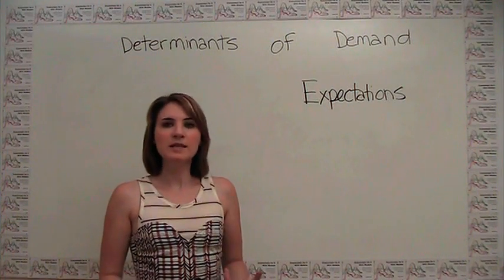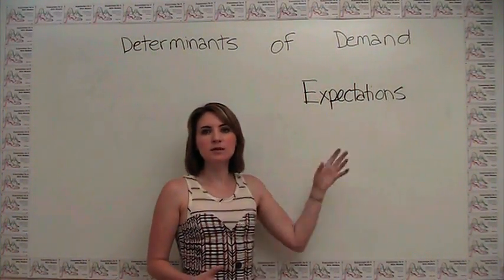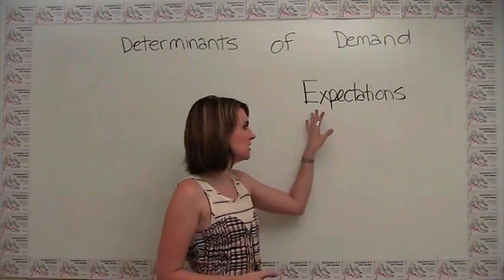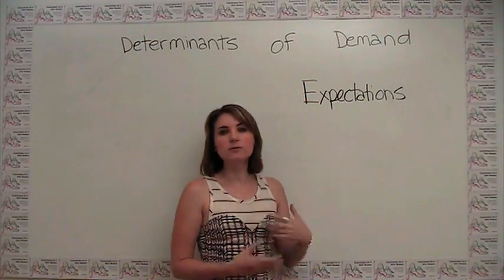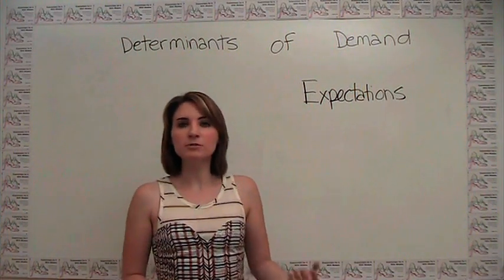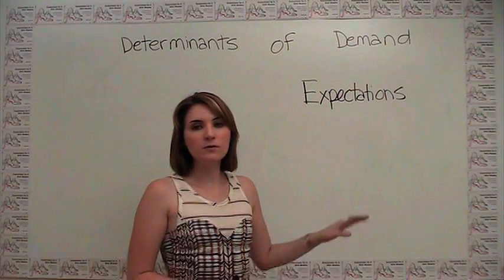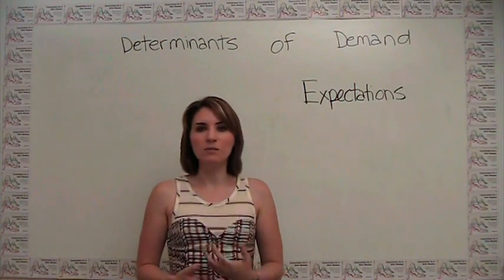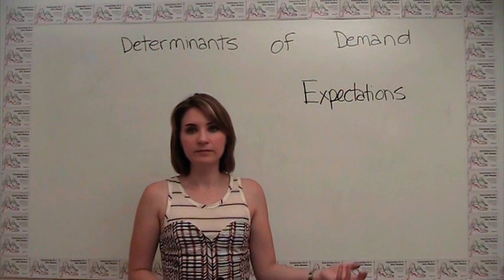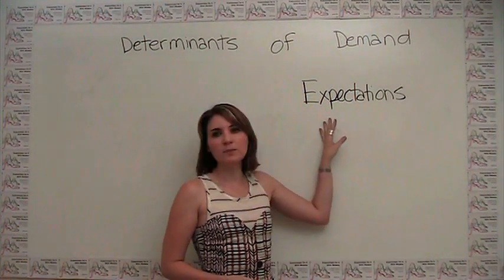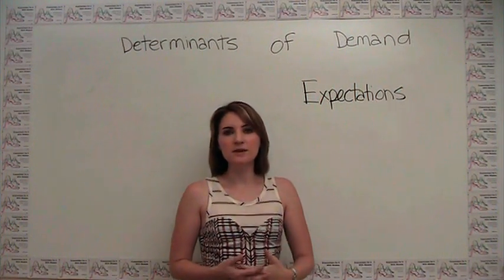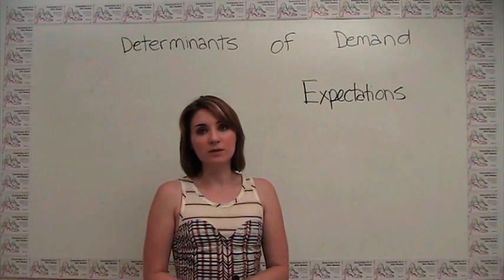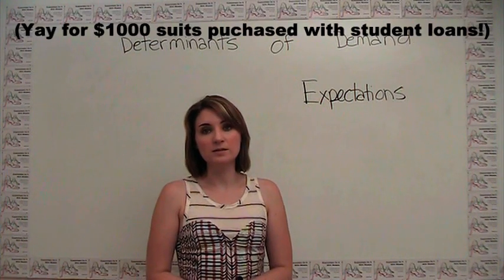Demand has a dynamic component in that expectations play a role not only in future demand but in today's demand. Expectations can involve future prices, future income, future prices of related goods, future tastes, and so on. For example, if I expected an item to get much more expensive in the near future, that might cause me to want more of that item today, increasing my quantity demanded. Similarly, if I expected my income to increase a lot in the future, that would affect my consumption today — as evidenced by business school students currently spending like crazy.